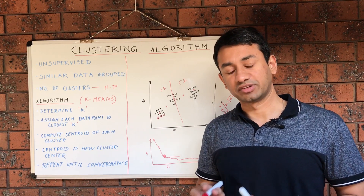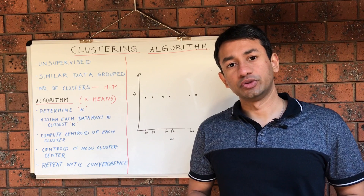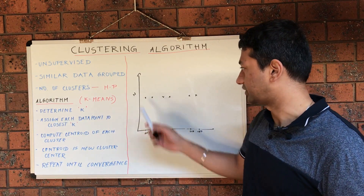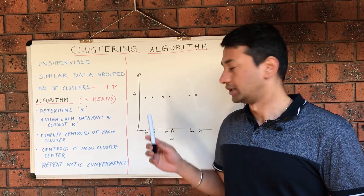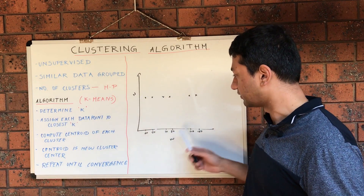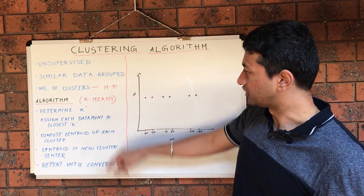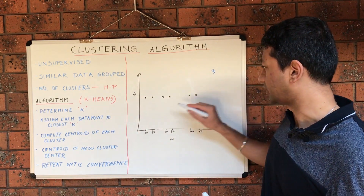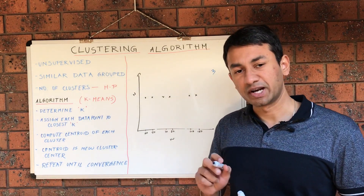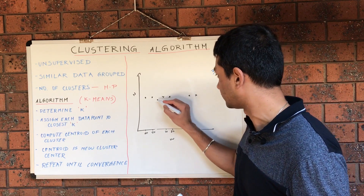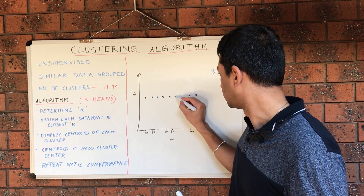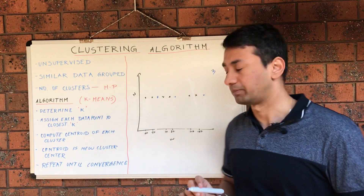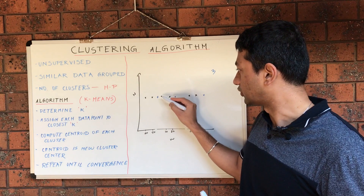Now let's get into the details and steps involved in the k-means algorithm. We will use the same weight and height example, but here we consider the height of the data points to be exactly the same while the weight varies. Let's assume we have already determined the value of K — let it be three, so there are three clusters in our dataset. First, we randomly plot the centroids of the three clusters, placing them at three different positions. After plotting the centroids randomly, the algorithm computes the distance from each data point to the closest centroid and assigns each data point to the nearest centroid.